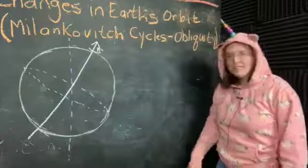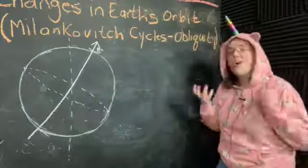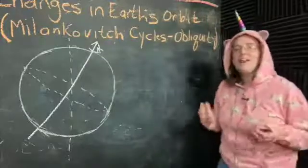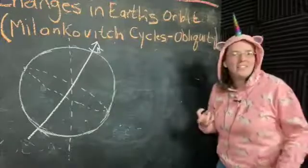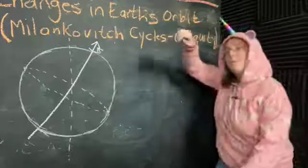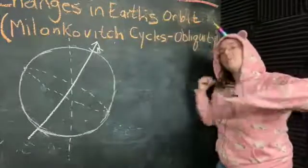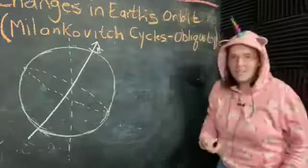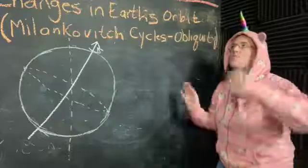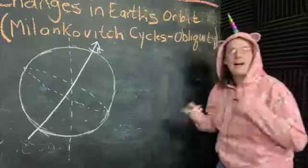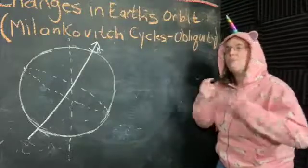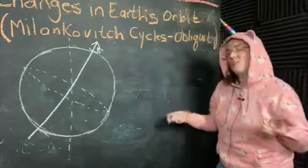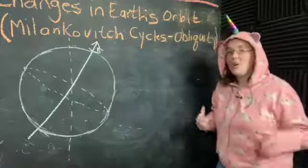So tilt of Earth's axis is pretty important, and its effects on climate also have to do with summer-winter differences. So if we were more tilted towards the Sun, then we would have warmer summers and colder winters. If we were less tilted, then we would have more mild winters and more mild summers. So our summers would be not quite as hot, and our winters would be not quite as cold.